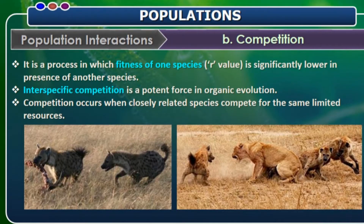Competition is an interaction where two species fight for the same natural resource. Whoever is superior will win the competition, and the other one has to leave or be excluded from that habitat. This is the process where the fitness of one species is significantly lower in the presence of another species, and whoever is the fittest, their population will flourish.